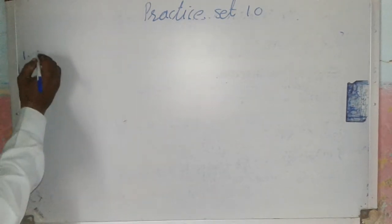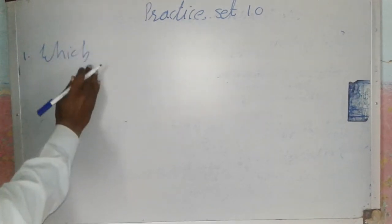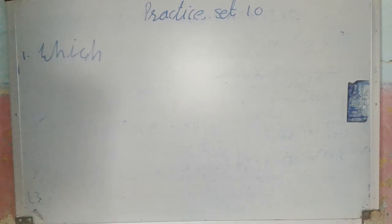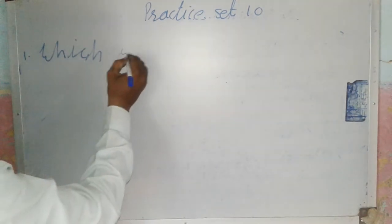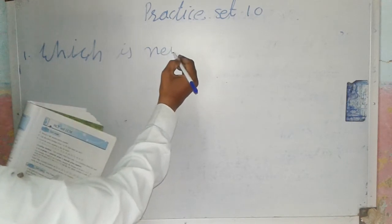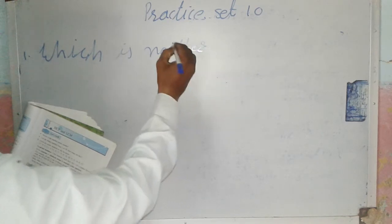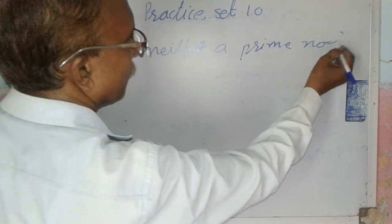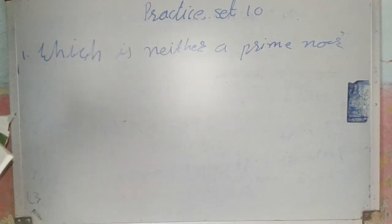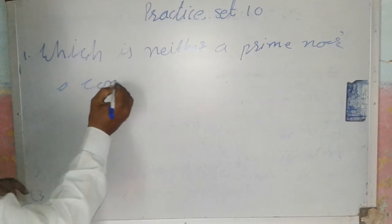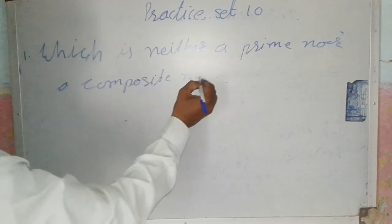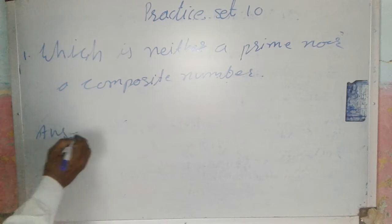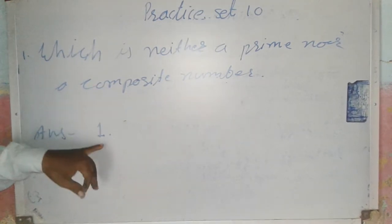Question one: which number is neither a prime number nor a composite number? The answer is one. So 1 is neither a prime number nor a composite number.